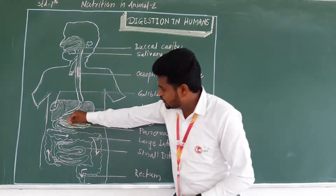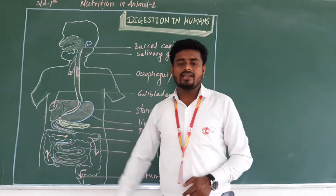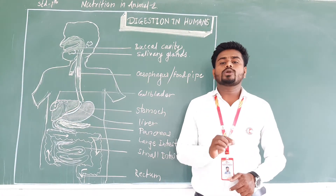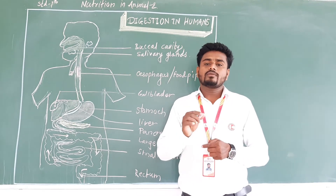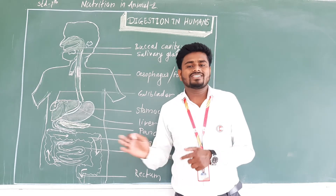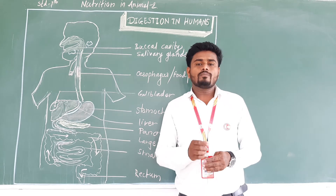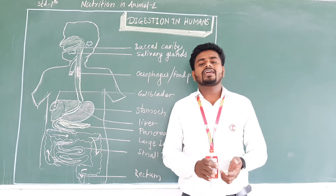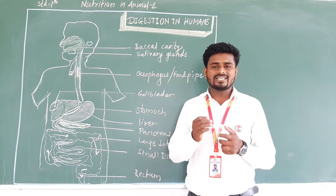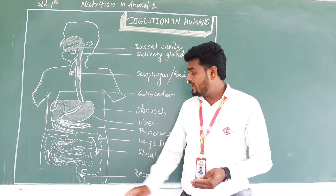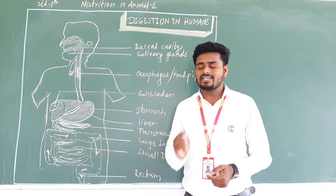Food passes through the small intestine, where the absorption of proteins and fats takes place. Most of the process of digestion takes place here. The food particles are converted into simpler chemical substances, and those chemical substances are absorbed into the blood in the small intestine.